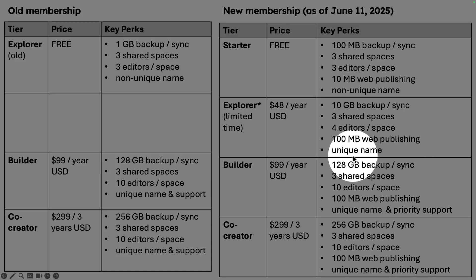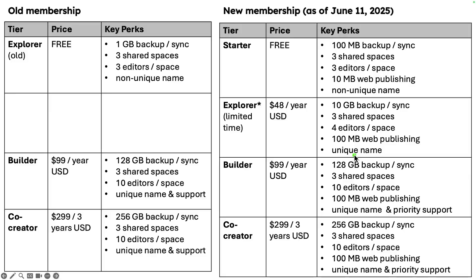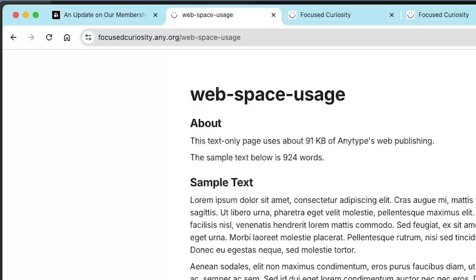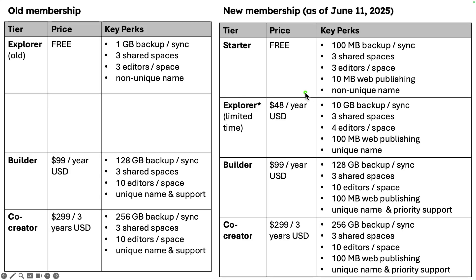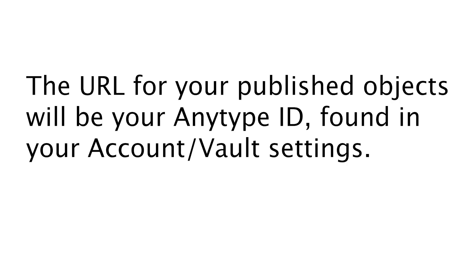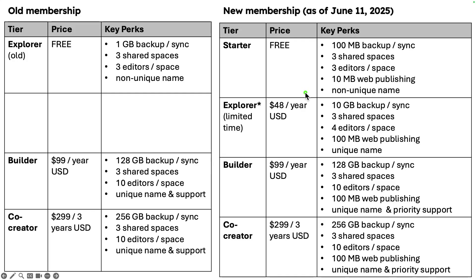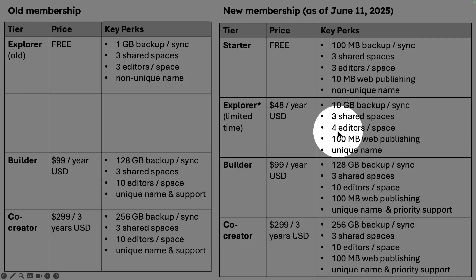The unique name is one I think is a great deal. It's essentially the domain of your web publishing — for myself, I have a site called focuscuriosity.any. If you have the non-unique name on the free plan and you do web publishing, it's going to be a super long alphanumeric number. It's basically your AnyType name assigned to your account and you can't change it unless you upgrade to paid plans — it just looks like an extremely long URL. This plan also comes with four editors, one more than the free plan.